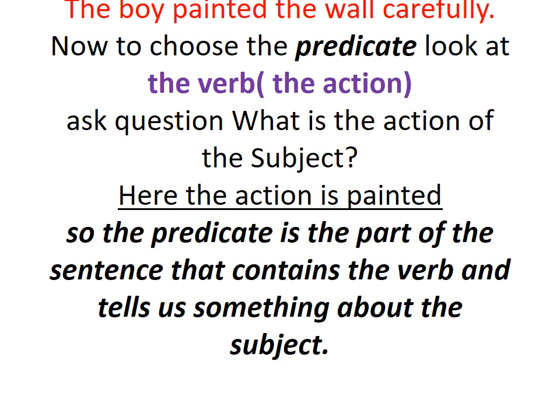To choose the predicate, always look for the verb first. Here the verb is 'painted.' Then ask: what is the action of the subject? The voice painted the wall carefully. The predicate is the part of the sentence that contains the verb and tells us something about the subject — it gives us information about the subject.